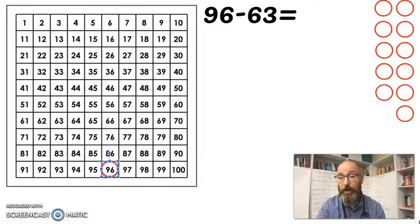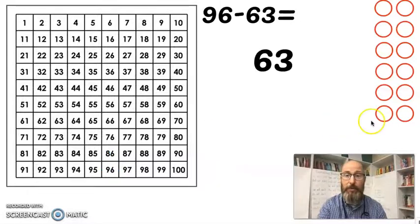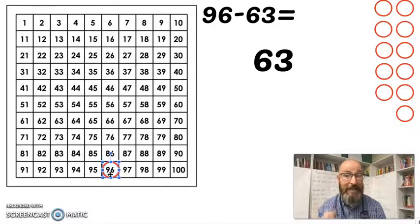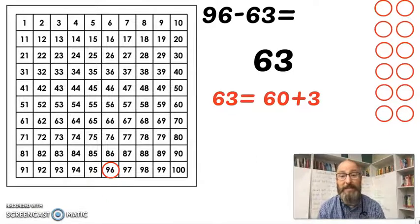Now that we have it on our hundreds chart we have to ask ourselves what do I subtract? What am I taking away? I'm taking away the 63. And again we have our 96 chosen already and we're going to subtract 63. Now obviously again we're not going to count backwards 63 times. Way too many. And it would take way too long. Again we know that 63 equals 60 plus 3.